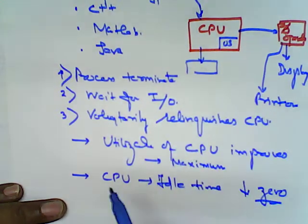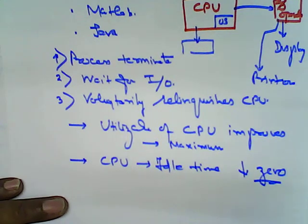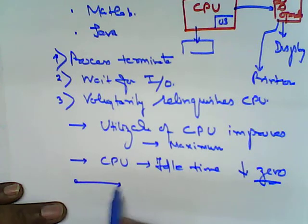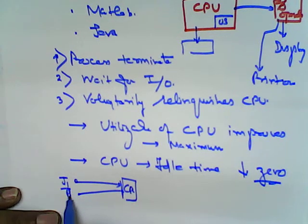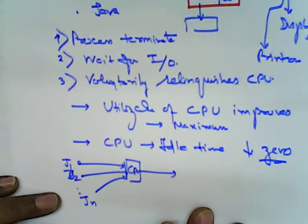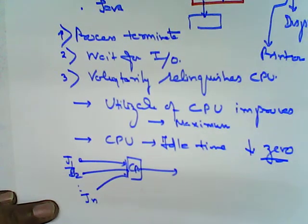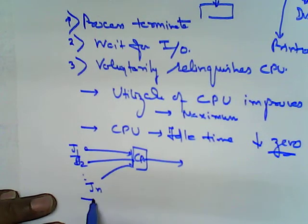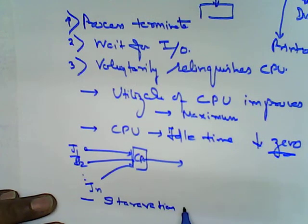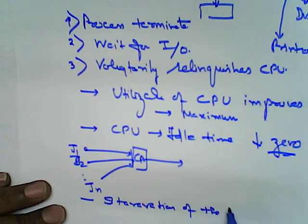That means, when one job is in an execution state, another job is also allocated to the operating system. So, one job, if it is, say J1 is coming to CPU, then immediately the J2 will be coming and like that Jn will be coming to the CPU. So, that is the advantage, or in short, if I want to say that starvation of the jobs is minimum.